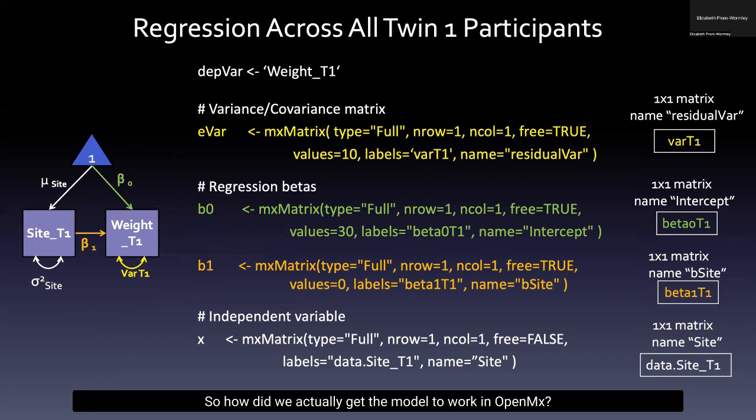So how did we actually get the model to work in OpenMX? If you scroll to line 61 in the code, you will see several lines of code that match what you see on this screen. Here we have translated our path diagram figure to a structural equation model that uses matrix algebra. One note to mention is that in many ways, OpenMX has its own specific language conventions for use in R. And as such, it is necessary to become familiar with some of the functions that are specific to OpenMX.